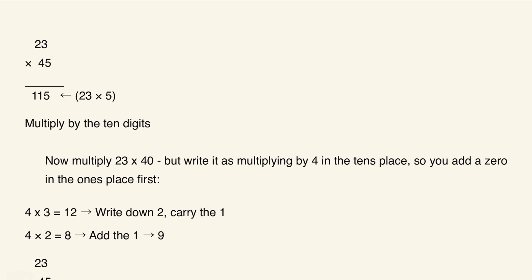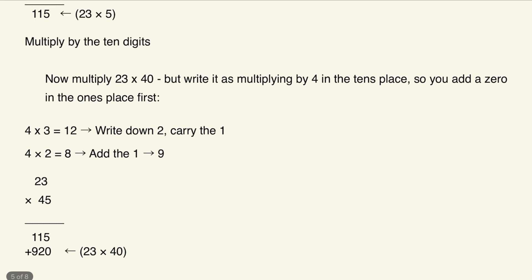Now multiply by the tens digit. We're essentially multiplying 23 times 40, but we write it as multiplying by 4 in the tens place. To do that, you must first add a zero in the ones place. Place value plays a huge role in this strategy — if you need a refresher, check out the separate video on place values.